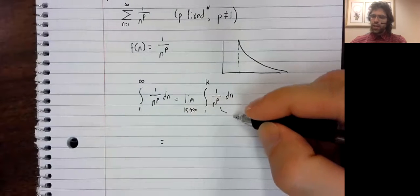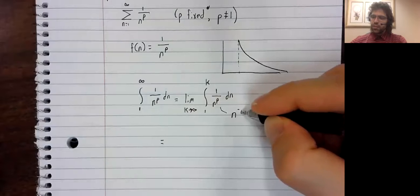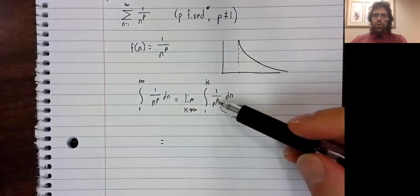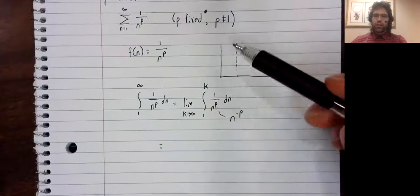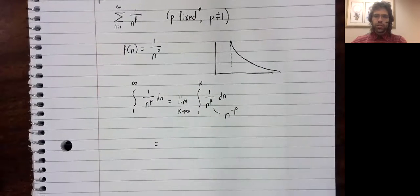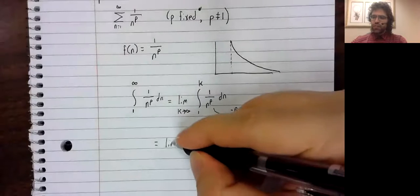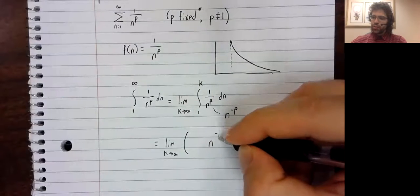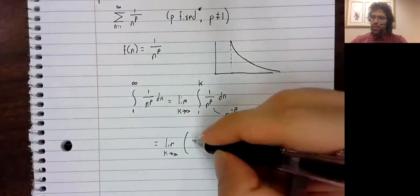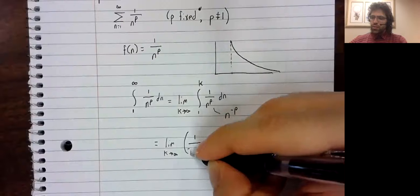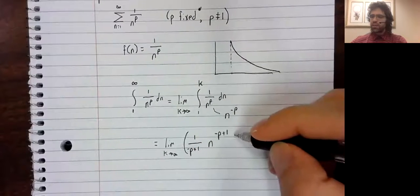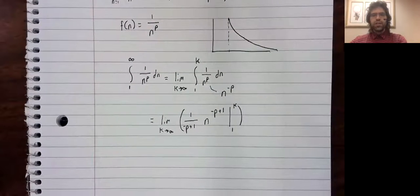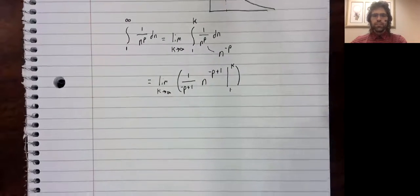So one divided by N to the P is N to the negative P. If P were one, this would require a logarithm, but P is not one. So to take the anti-derivative, we just bump this up by one and then we divide by that new power. We'll plug in the K, plug in one and subtract.